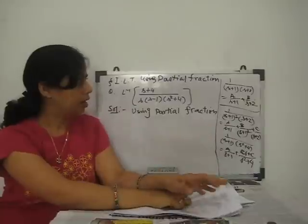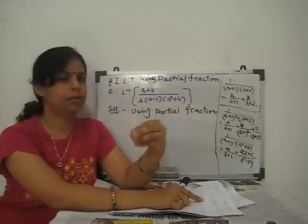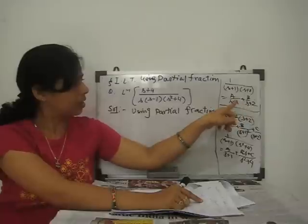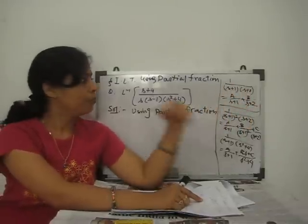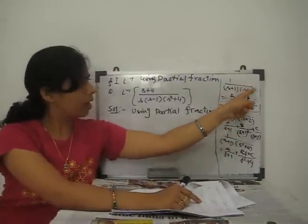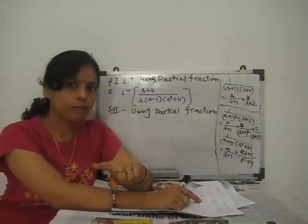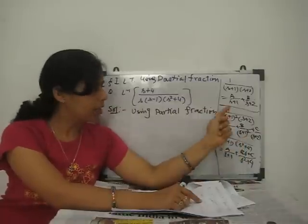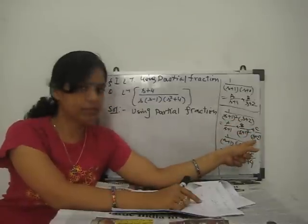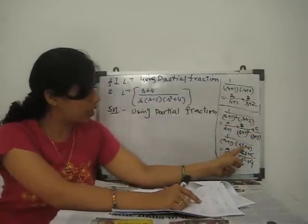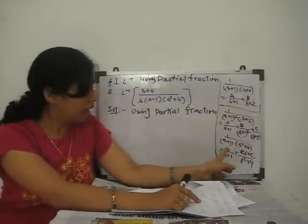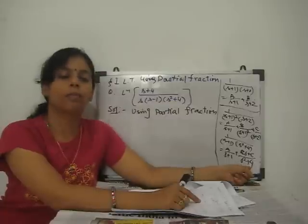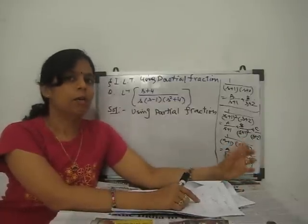Partial fraction is very useful for solving these types of transforms. Let me briefly recall: if you have a fraction, you can factor it as A/(s+1) plus B/(s+2). If there is a whole square, you write A/(s+1) plus B/(s+1)² — and if a cube, plus C/(s+1)³. For a quadratic factor like s²+4, you write A/(s+1) plus (Bs+C)/(s²+4).